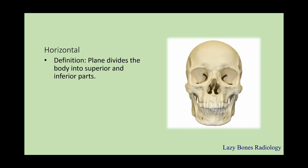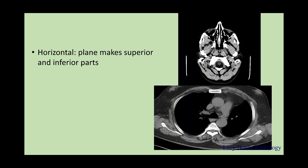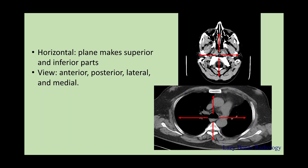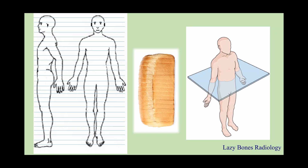Next is the horizontal plane. This plane divides the body into superior and inferior parts. These slices are made crosswise throughout the body in a perpendicular or right angle to the coronal plane, also known as the transverse, axial, or cross-sectional plane. When looking at a horizontal plane, we are only able to identify structures anteriorly, posteriorly, laterally, and medially. Going back to bread — if you stack up your bread, those are horizontal planes. I use these little tricks so that when you're looking at a test, you don't get confused and can identify something familiar like bread.